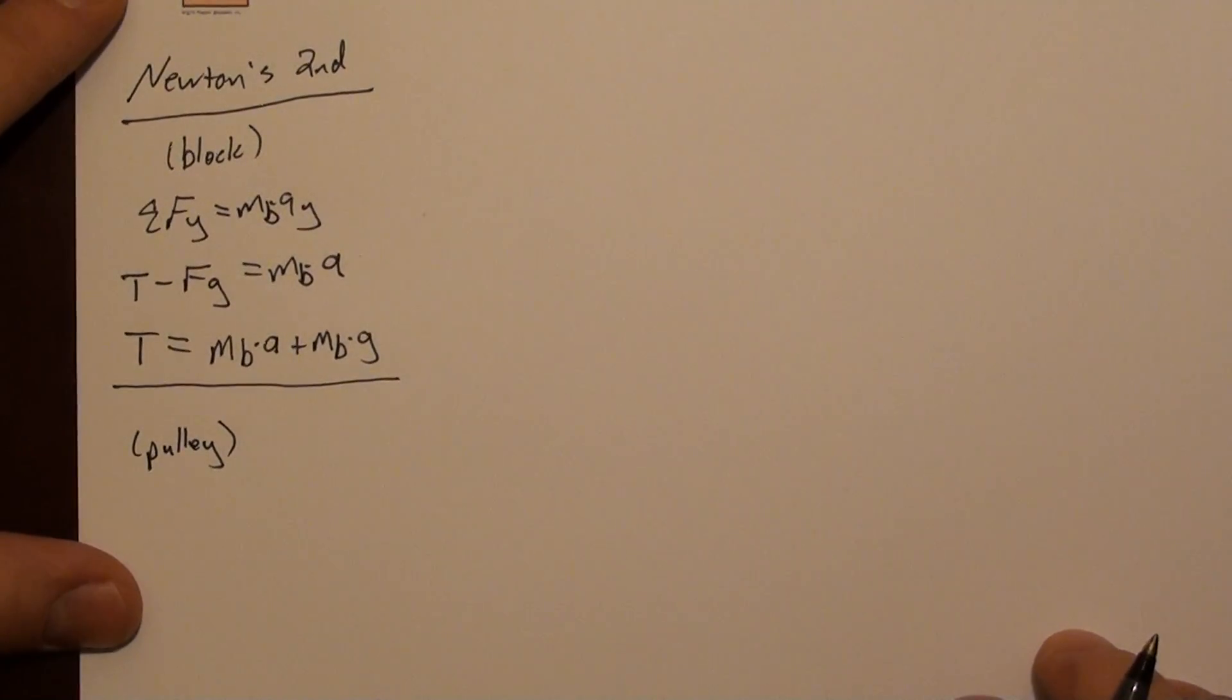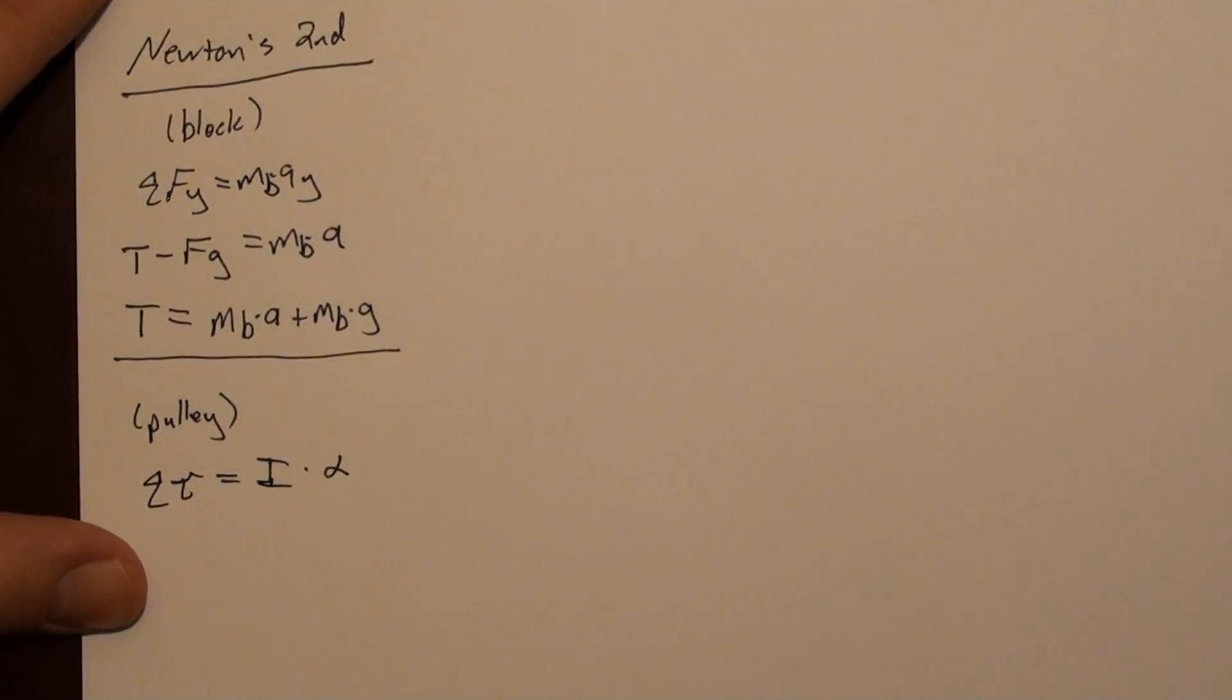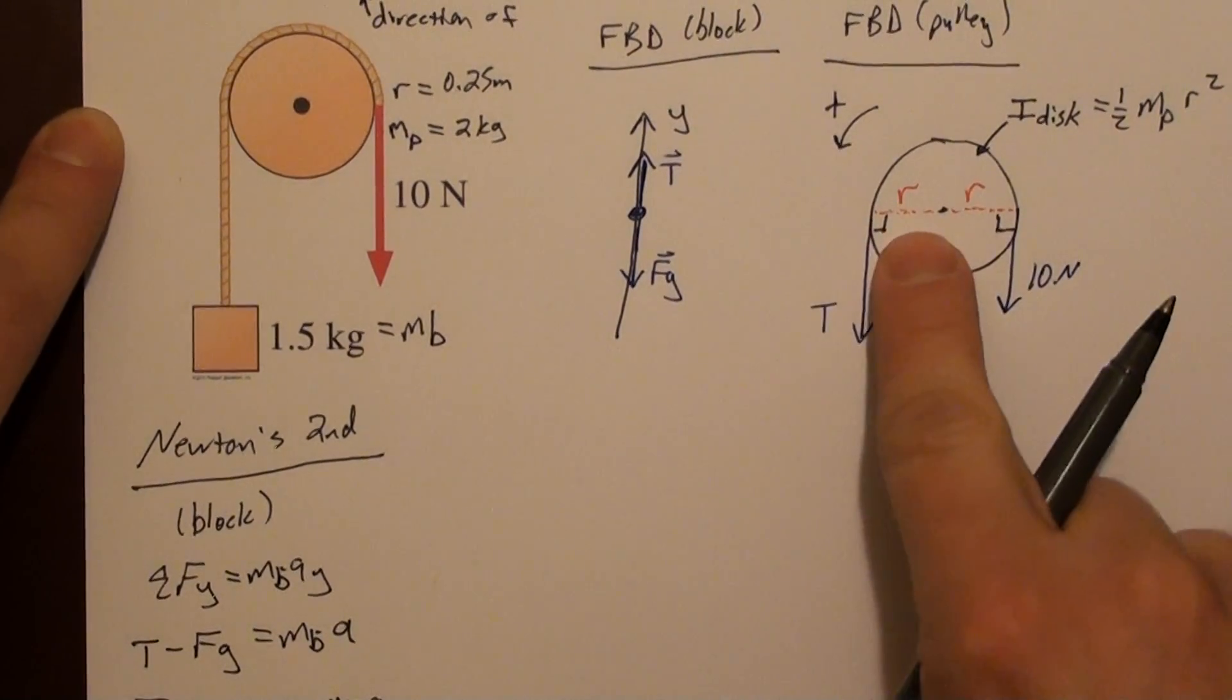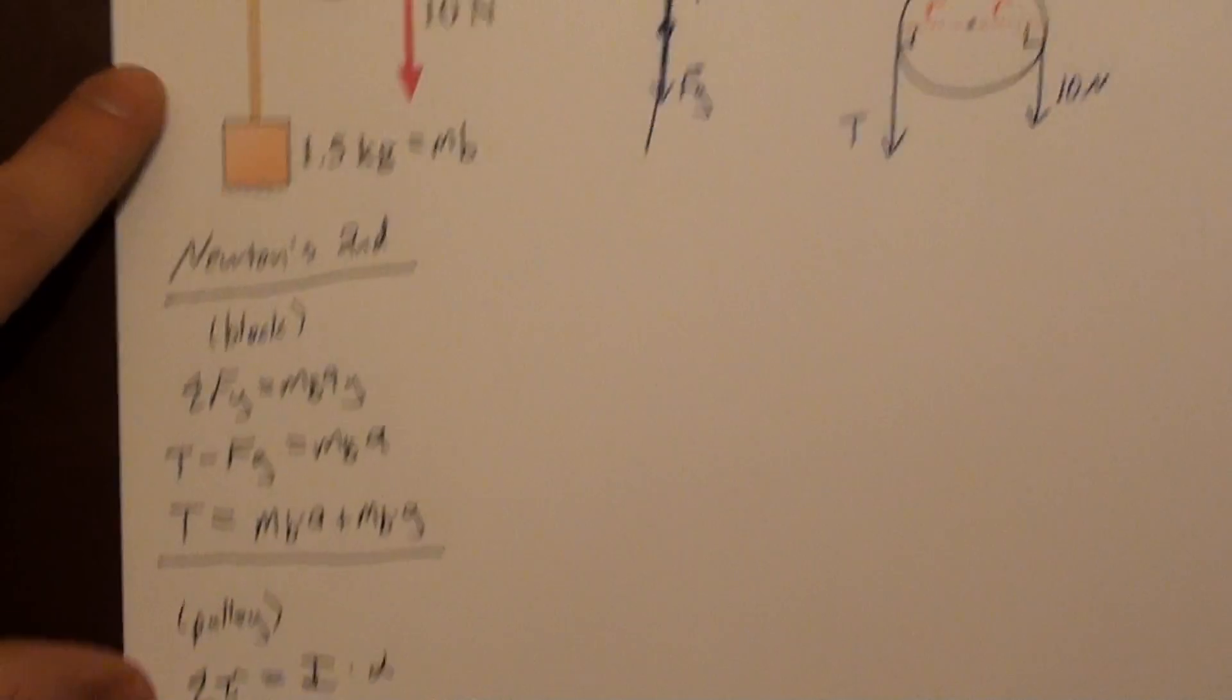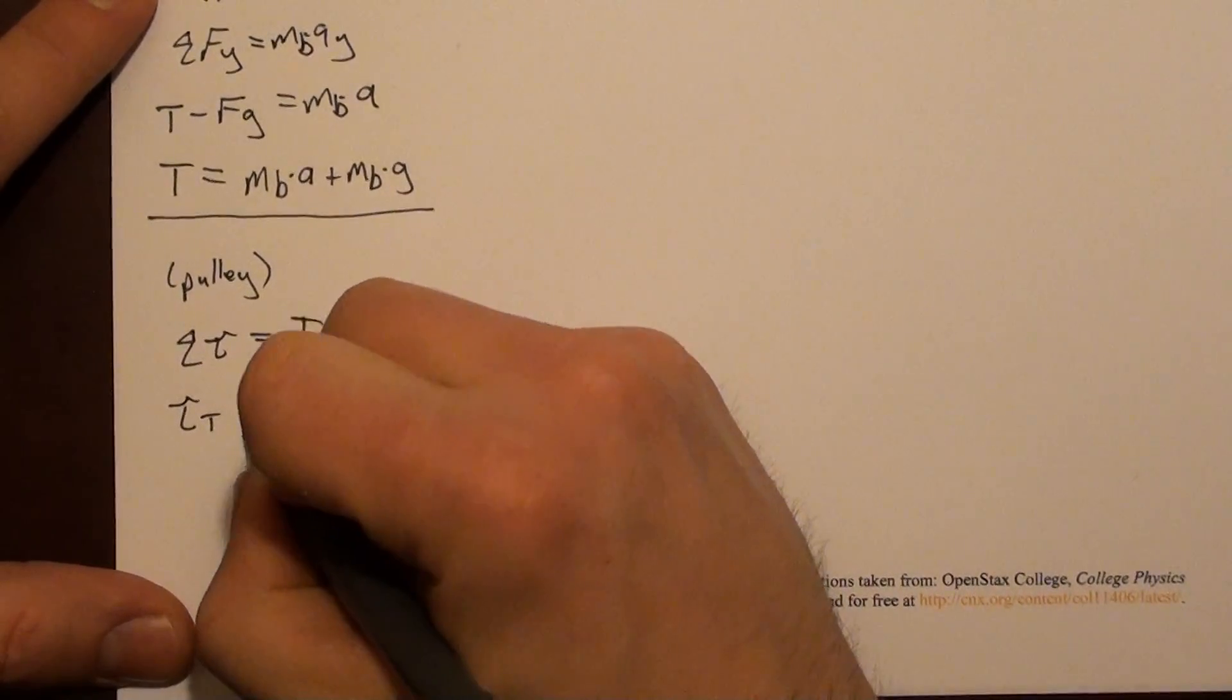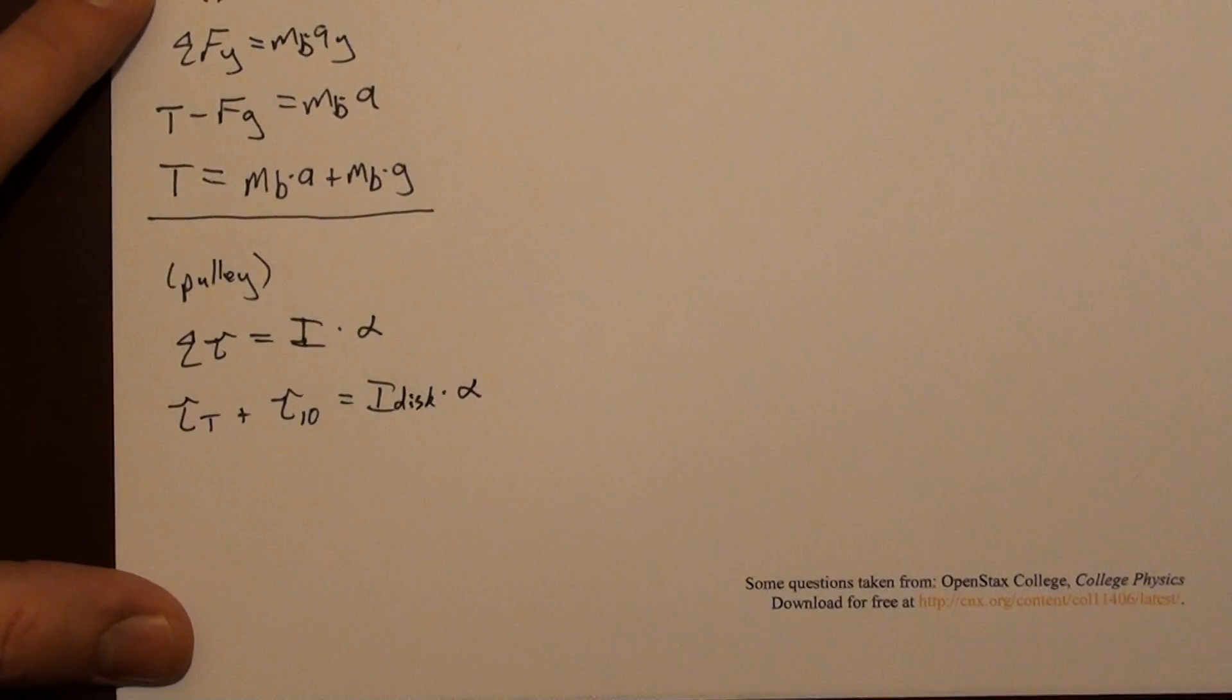So now let's apply Newton's second law for the pulley. And this is a rotating object, so I'm going to use the sum of the torques equals I alpha. So the torques on this guy are, there's a torque due to tension, and there's a torque due to this 10 newton force. They're both applied at R, and they're both perpendicular. So each of those torques is going to be just Rf. So we'll fill that out here. We have, let's say,